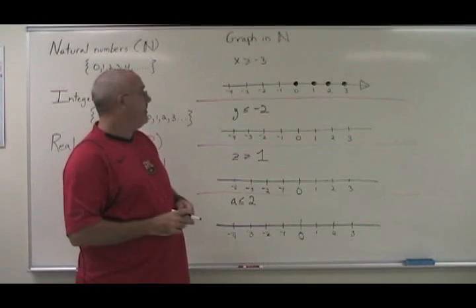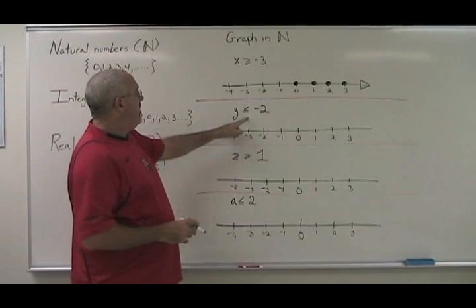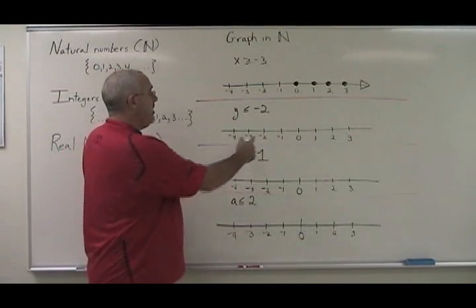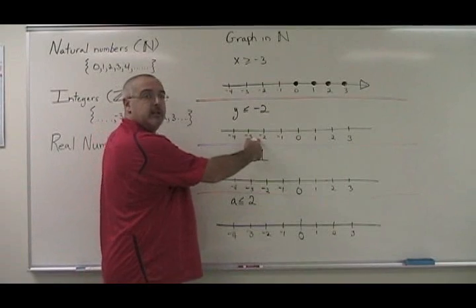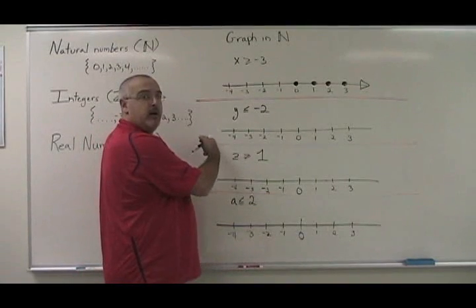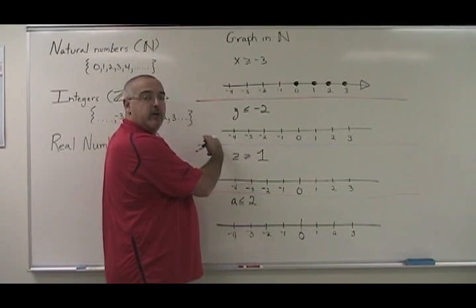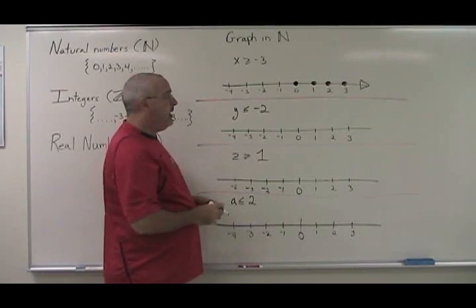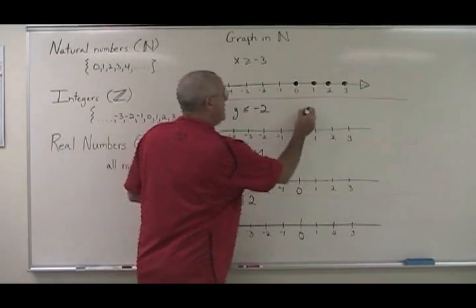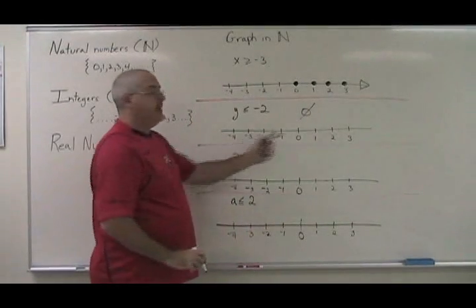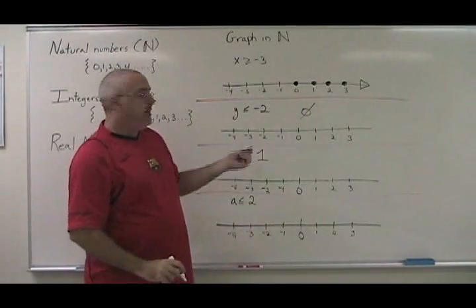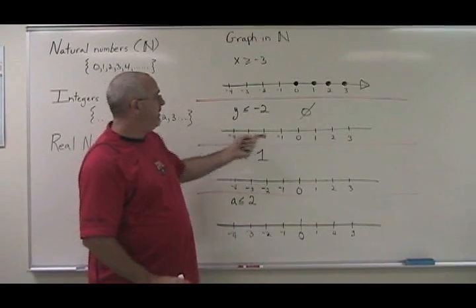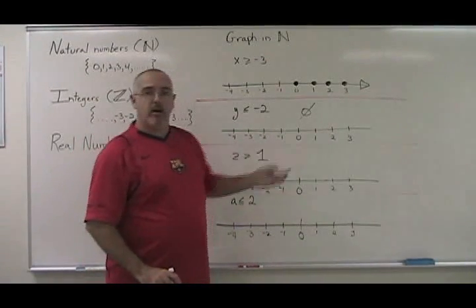This is how it looks on a number line. Why less than or equal to negative two? Well, all the numbers less than or equal to negative two are over here, but none of the natural numbers are over here. So this is sort of a trick question as well. The answer is empty set — there is no answer. So if I had to graph that on the number line, I would just give a blank number line as my answer.